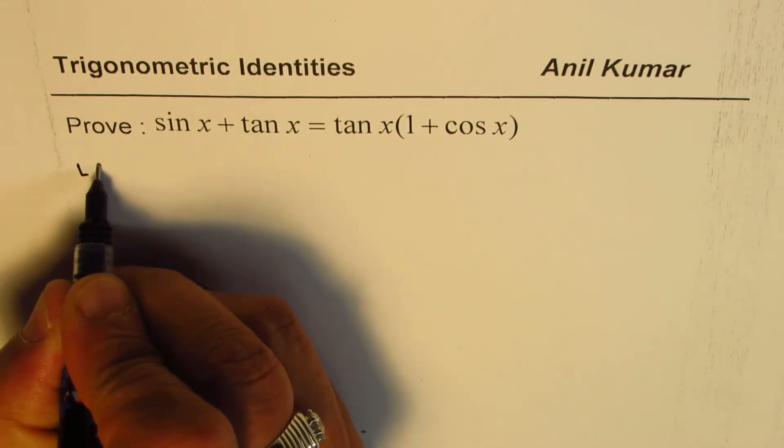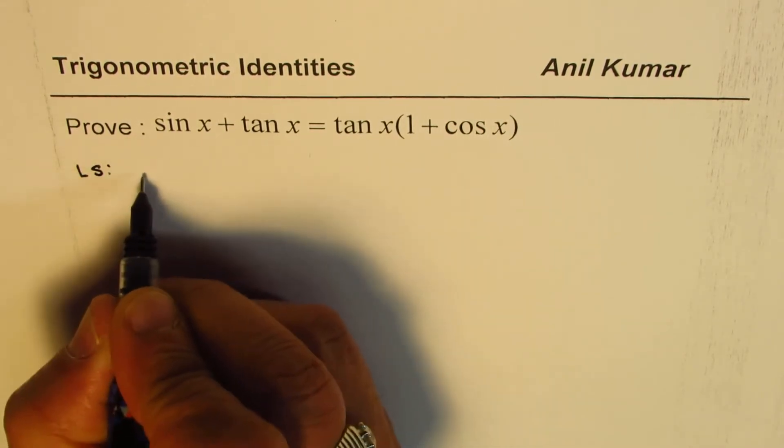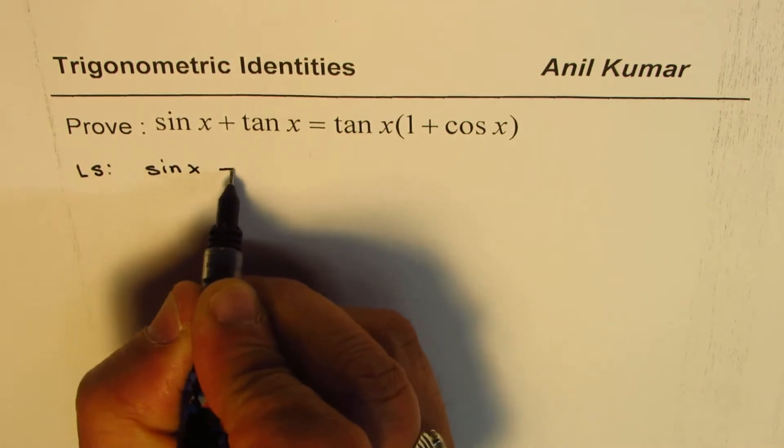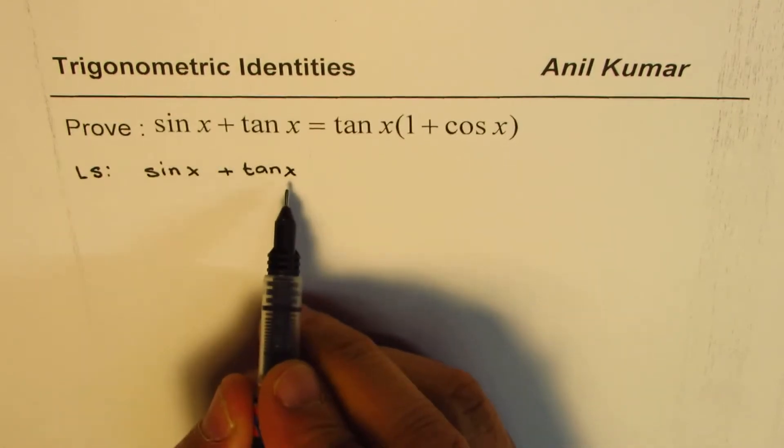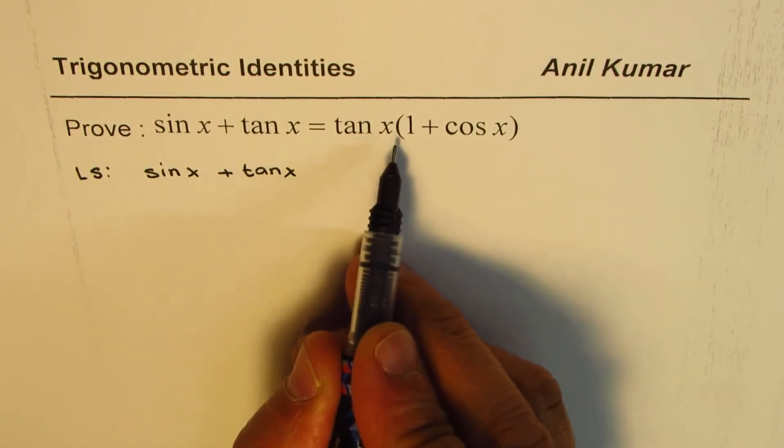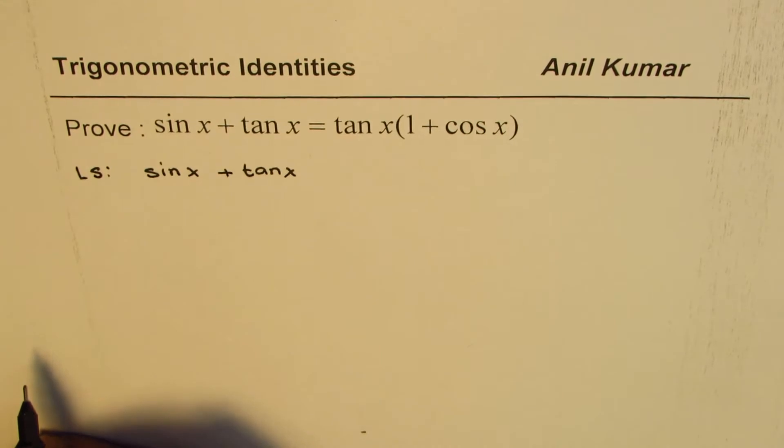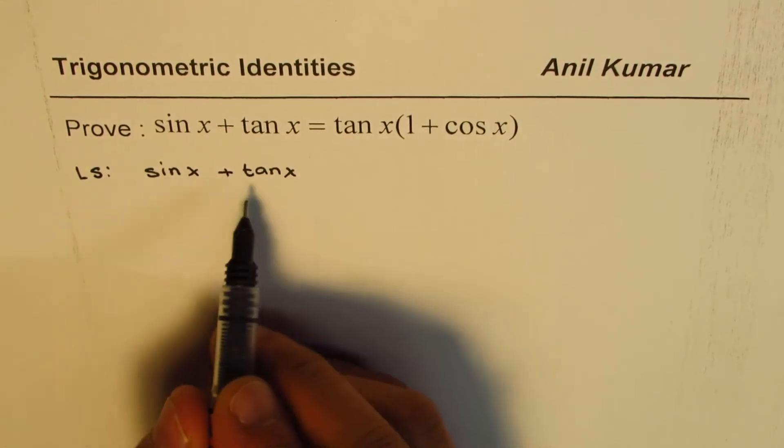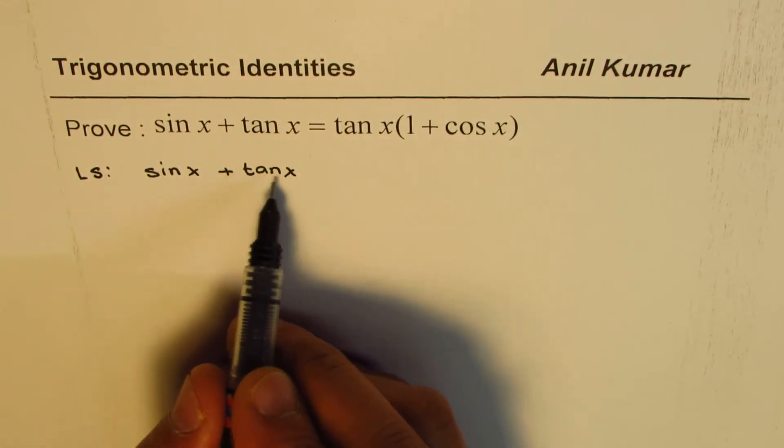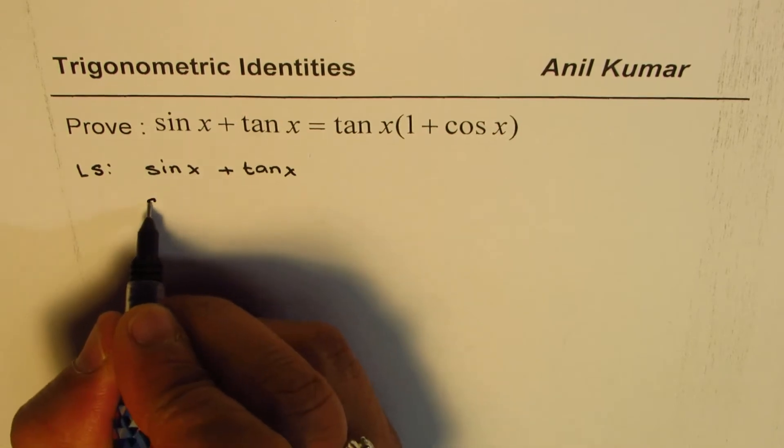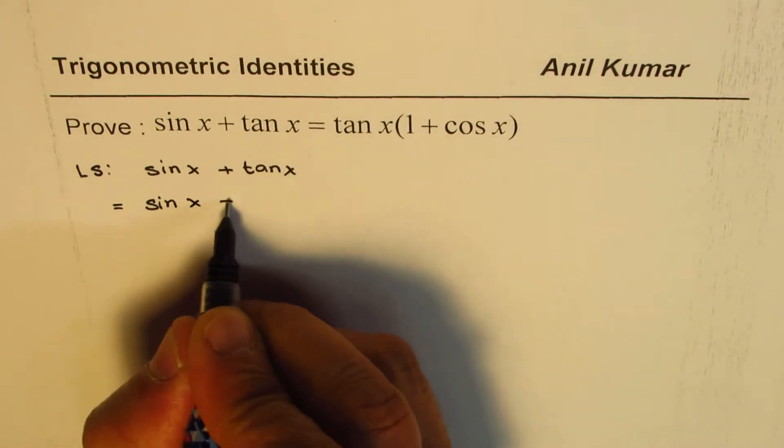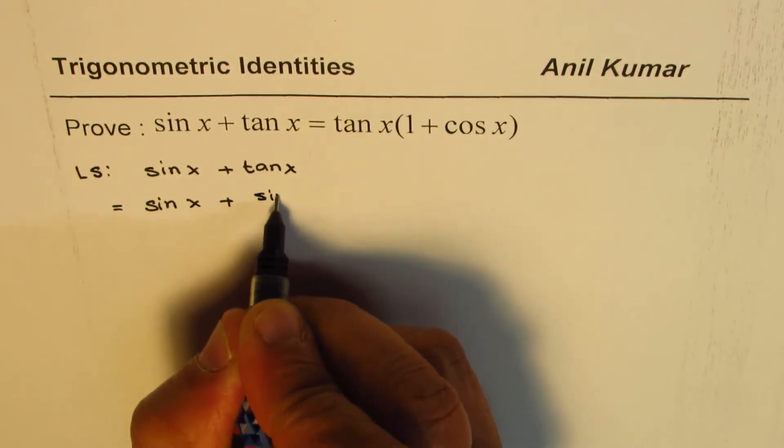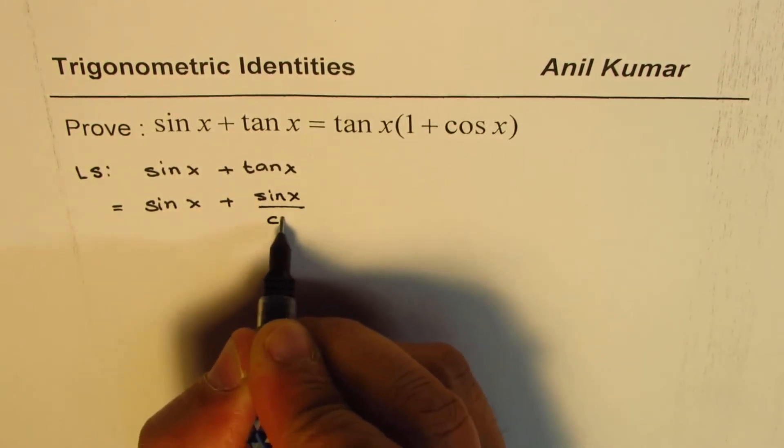Let's start from the left side. Left side is given to us as sin x plus tan x. We need to prove that this is tan x times 1 plus cos x. Now what we can do here is that we can write tan as sin over cos. So that gives us the left side equals sin x plus sin x over cos x.